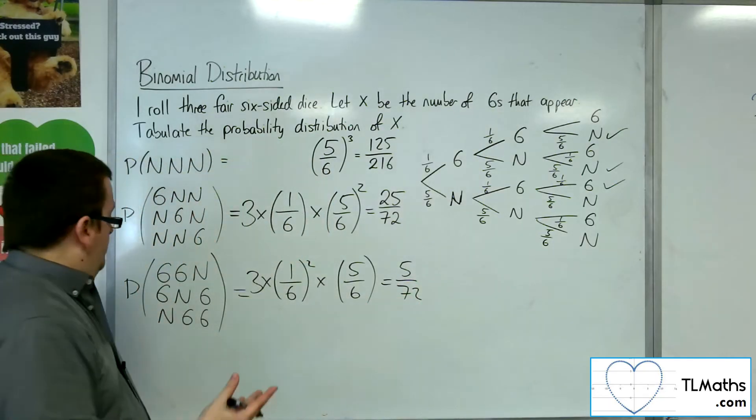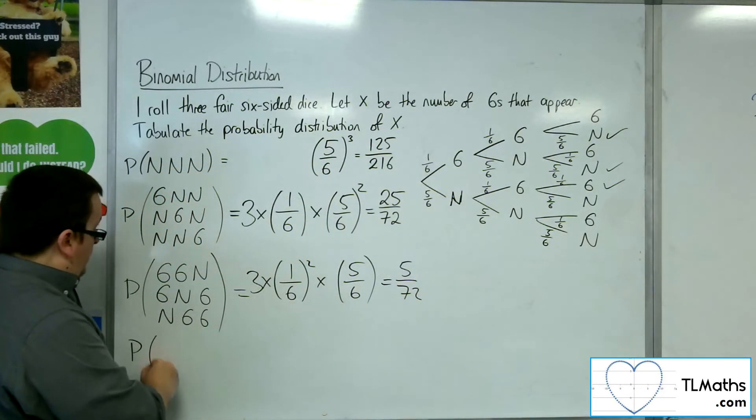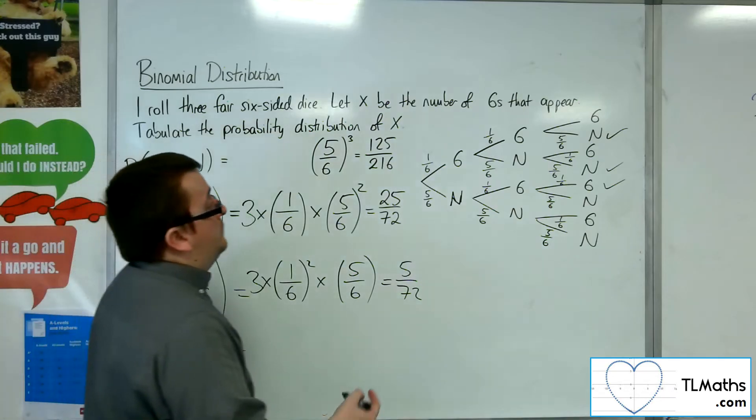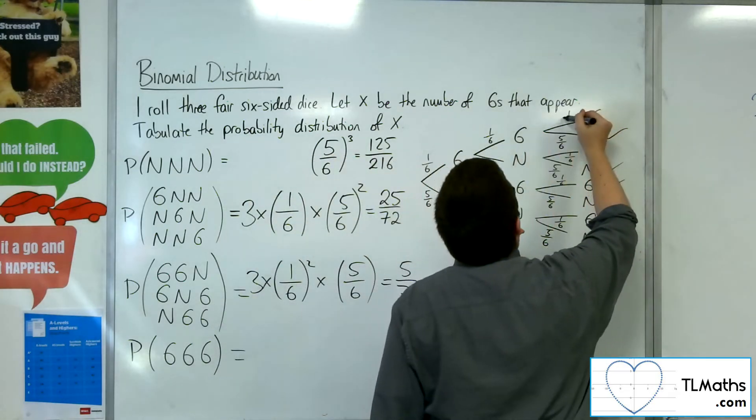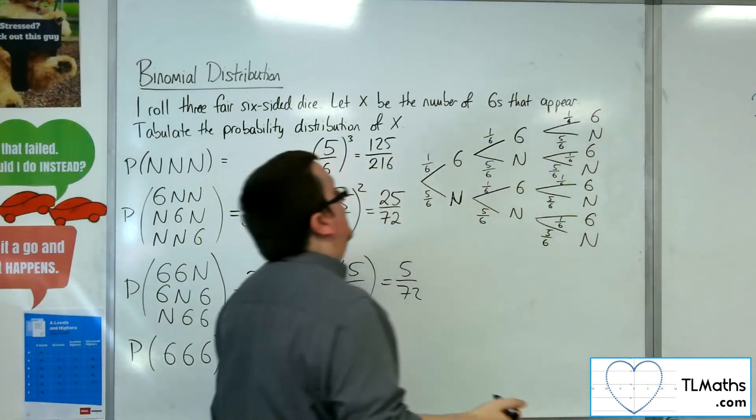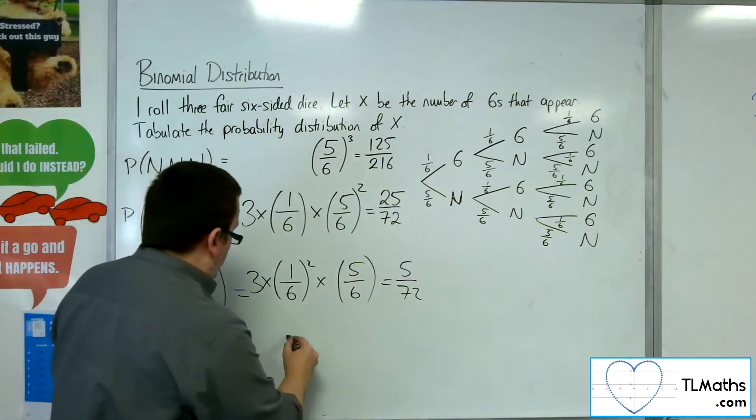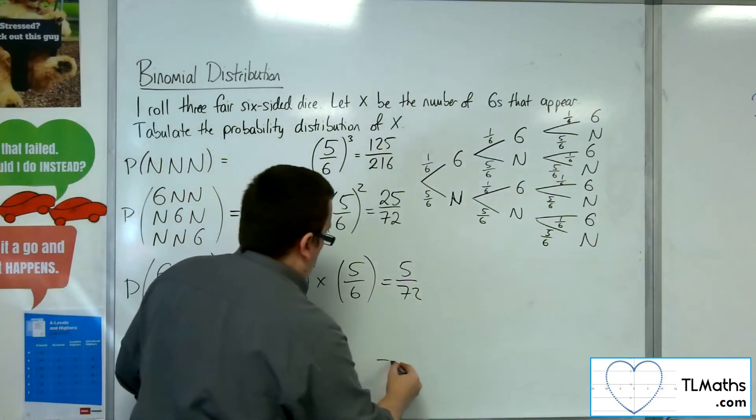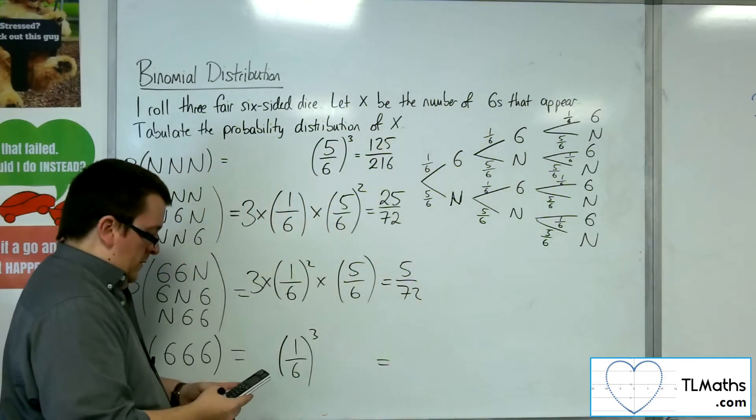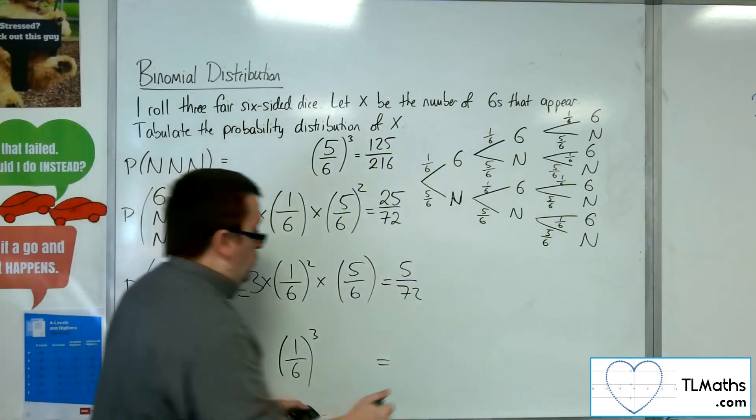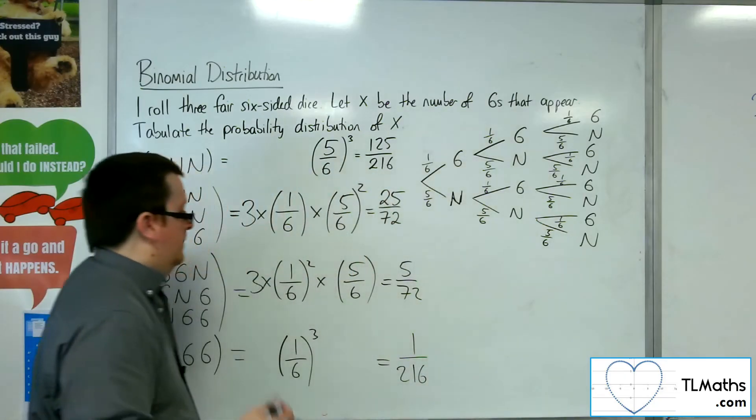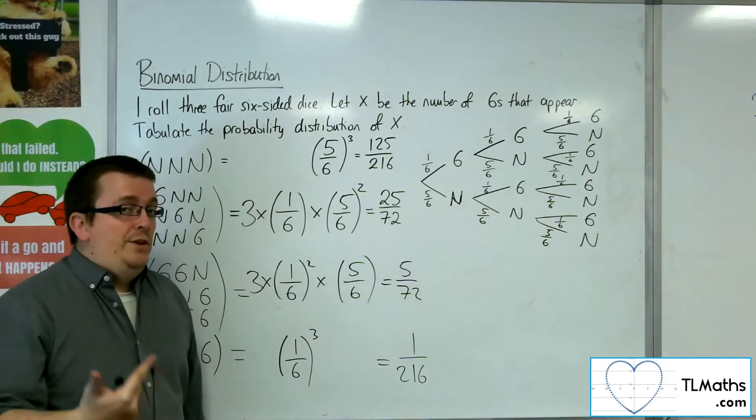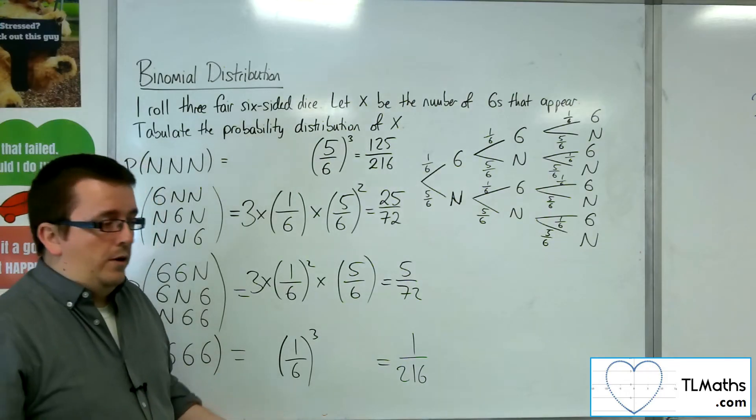So then finally, I've got the probability of just getting 3 sixes in a row. So 3 sixes in a row will be 1 sixth times 1 sixth times 1 sixth. There's only one way that can happen. So 1 sixth cubed, that's 1 over 216. So, can you see where this has come from?